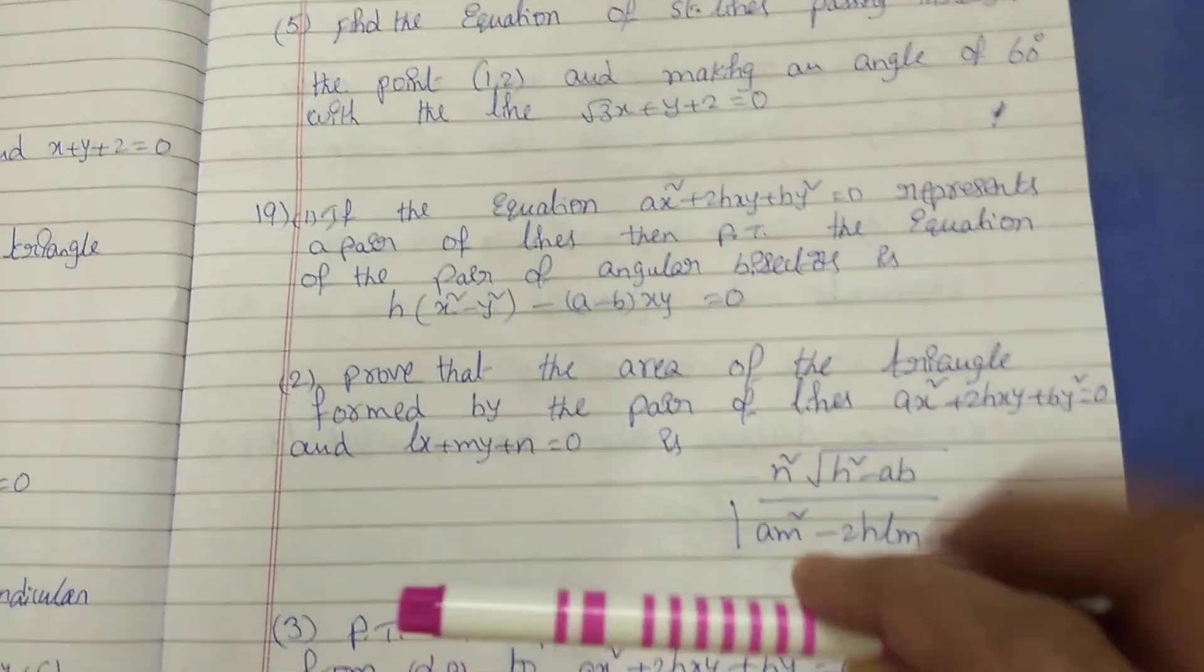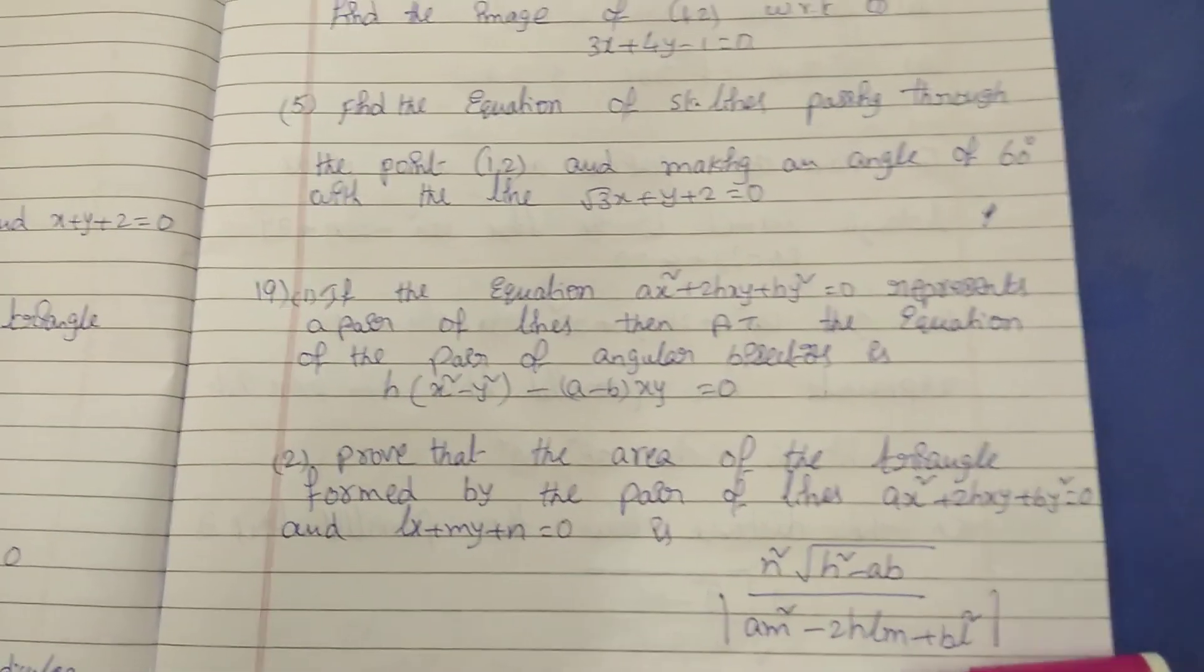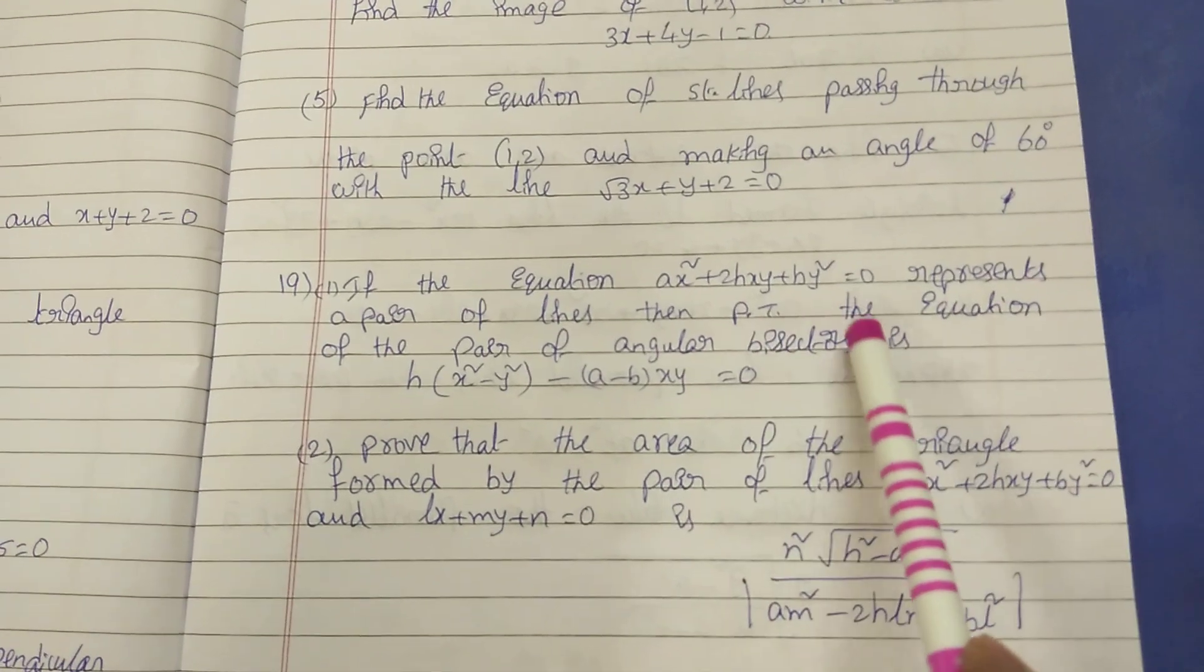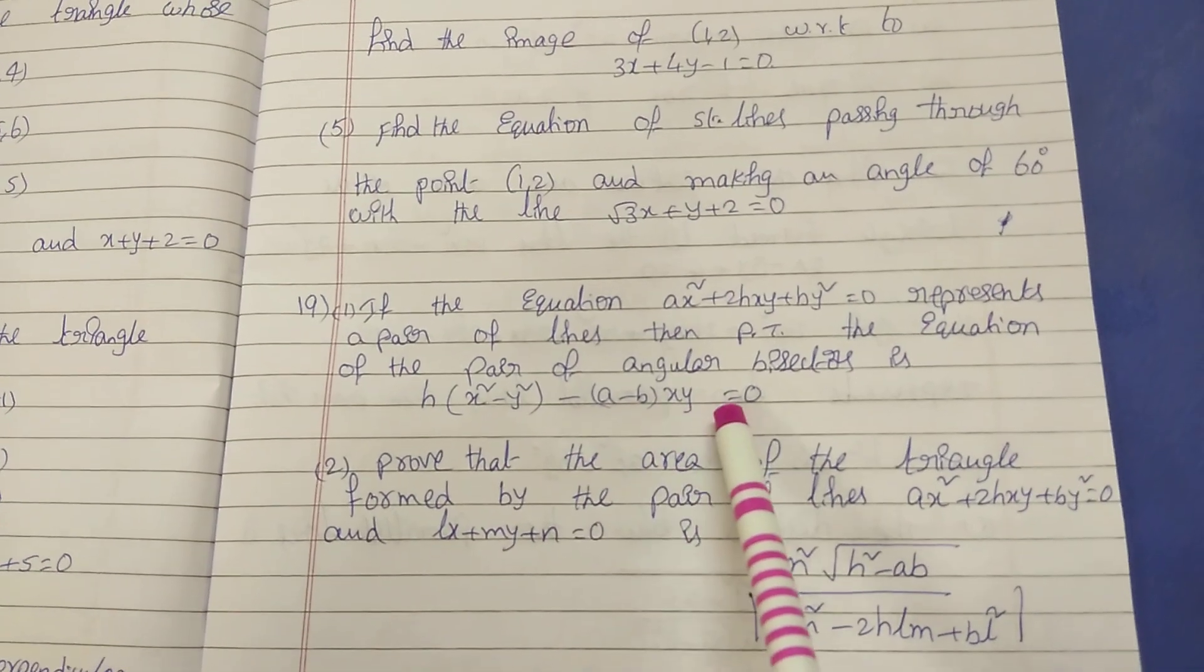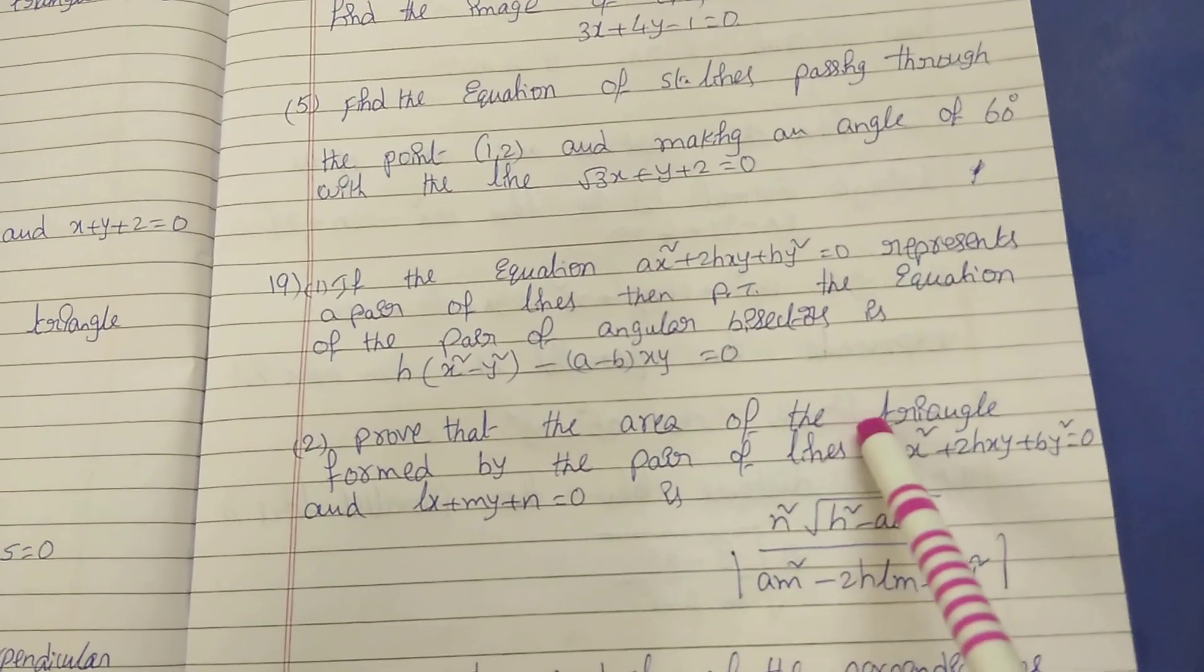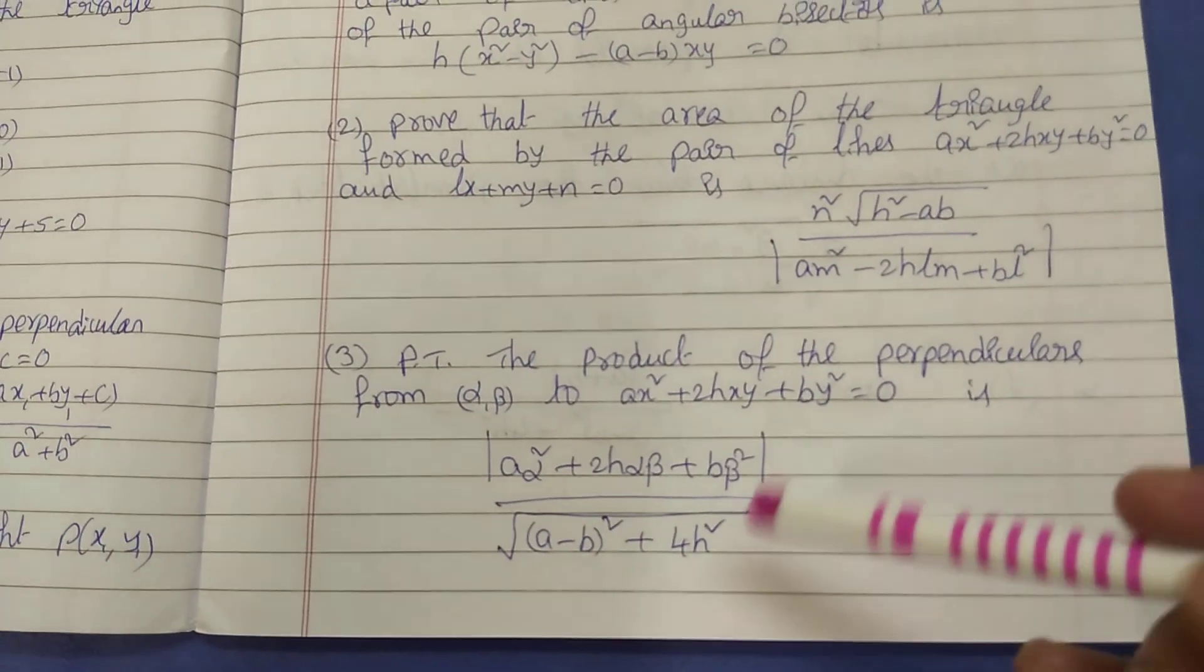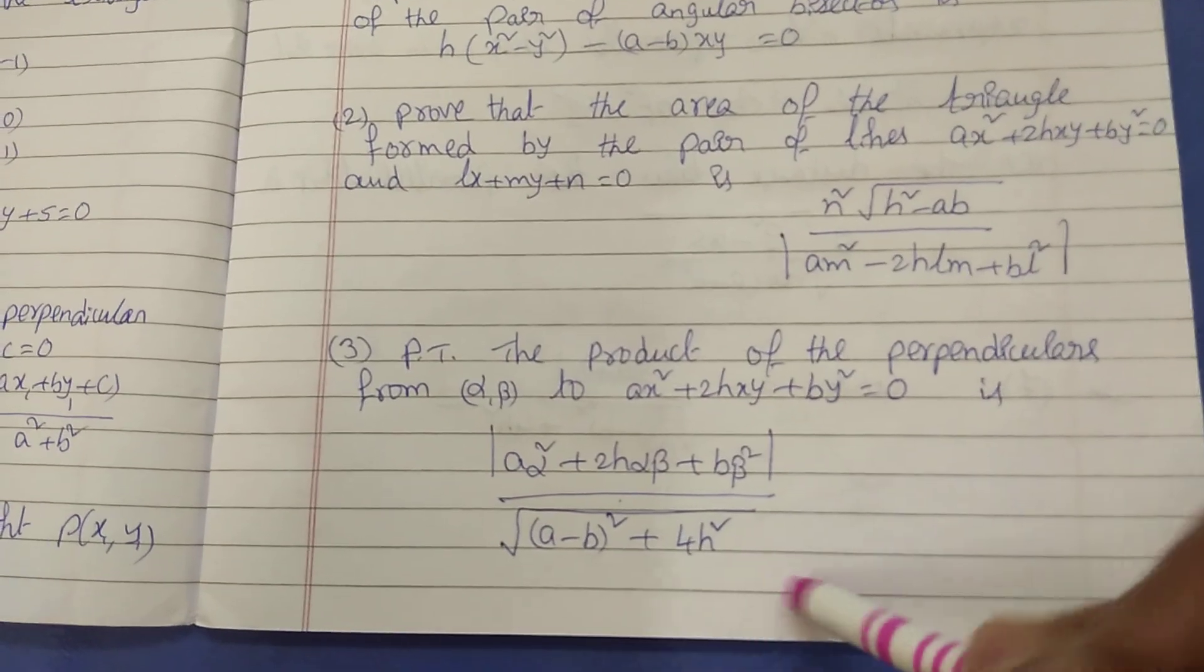Now 19th bit, here listen, pair of straight lines, there are 5 theorems. If the equation AX square plus 2HXY plus BY square equal to 0 represents a pair of lines, then prove that the equation of the pair of angular bisectors is H of x square minus y square minus a minus b into xy equal to 0. This is important theorem. Next, area of the triangle formula: N square into root of h square minus ab. This theorem. Next, product of the perpendiculars from alpha beta: a alpha square plus 2H alpha beta plus b beta square by root of a minus b whole square plus 4H square, this theorem.